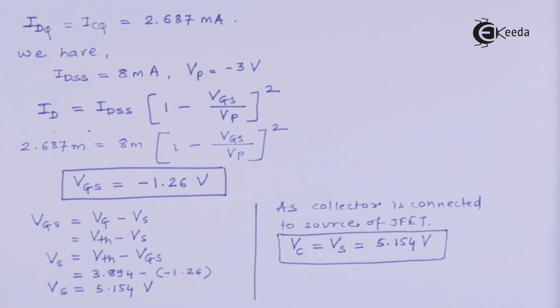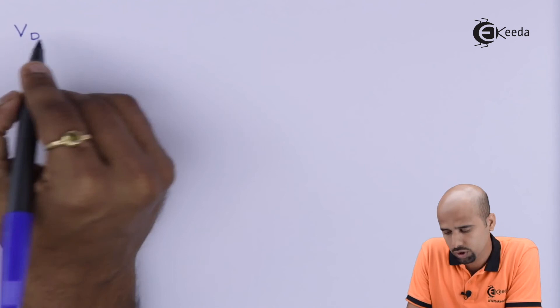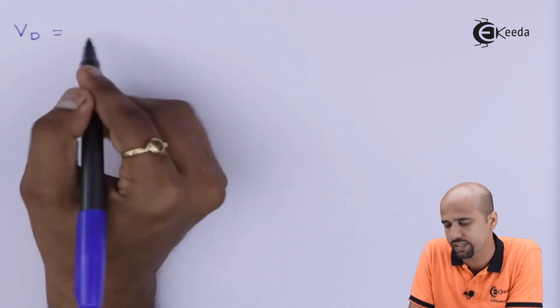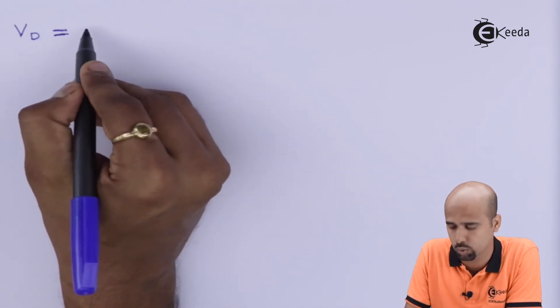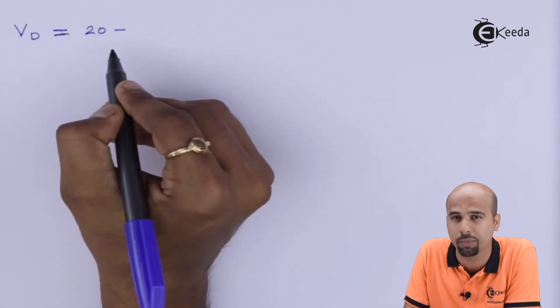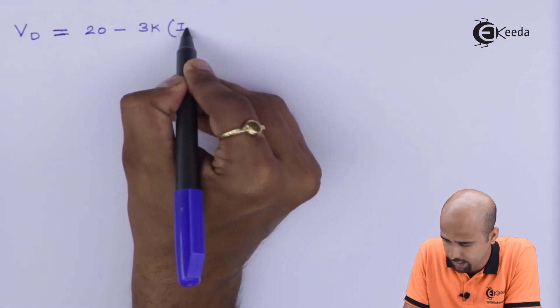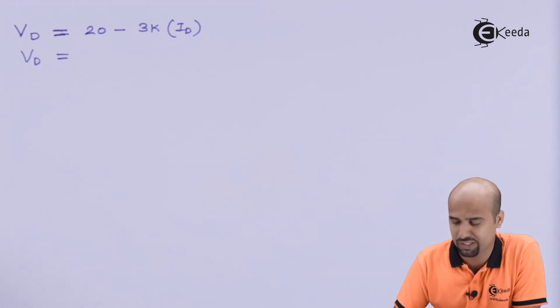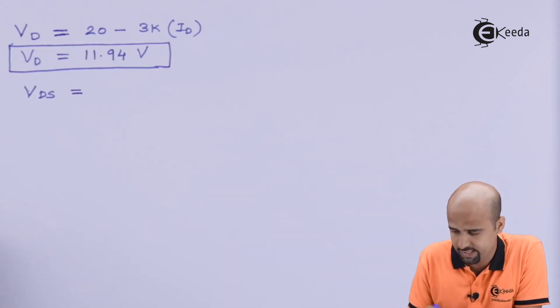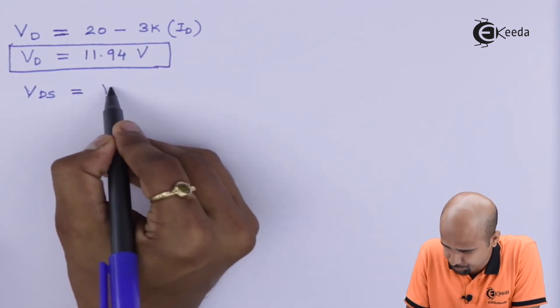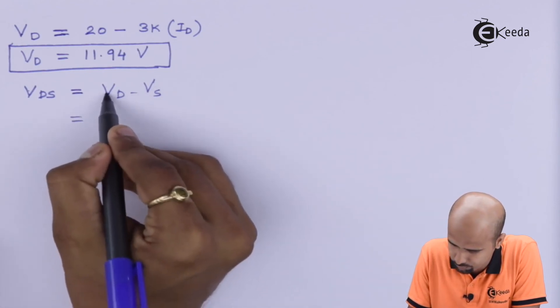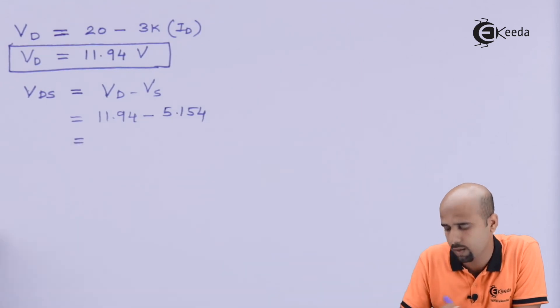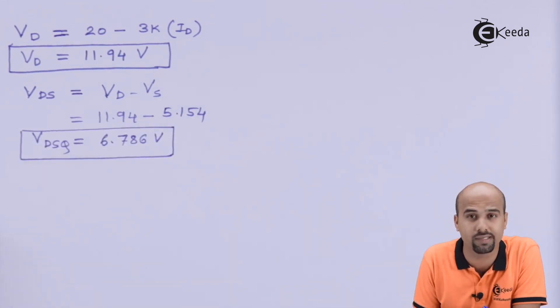Now, we will reach towards the final findings Vd, right? If you know the value of Vd, then we can easily go to find out the value of Vds. Because we all know that what is the value of Vs? Vs we have already got. So, Vs. Okay! Vd is equal to DC voltage, that is 20 volts, minus drop across the drain resistance, that is nothing but 3k multiplied by Id. So, this is a very fantastic job to get the value of Vd. So, the answer is 11.94. The value of Vd is 11.94. Great! Vds, that is one of the finding and Vds is equal to Vd minus Vs is equal to 11.94 minus 5.154 volts. This is the value of Vds Q very easily, right?